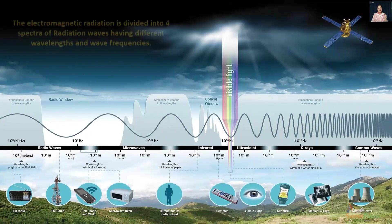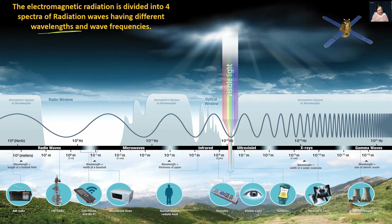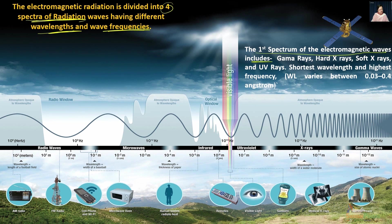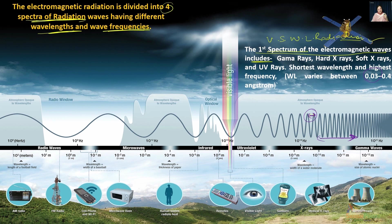The electromagnetic radiations emitted by the sun can be divided into four spectra based on wavelength and wave frequency. The first spectrum is very short wavelength radiation, which includes gamma rays, hard X-rays, soft X-rays, and UV rays. In this spectrum the wavelength is very, very small — so small it can penetrate through various objects — and the wave frequency is very, very high. These wavelengths can range as short as 0.03 to 0.4 angstroms. Because of their ability to penetrate through virtually anything, they are considered very harmful for our environment and for human beings.